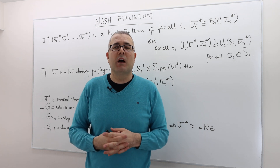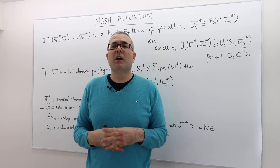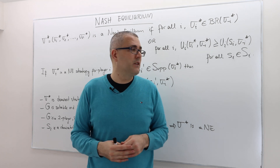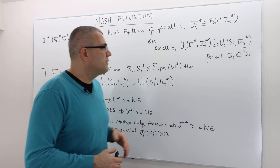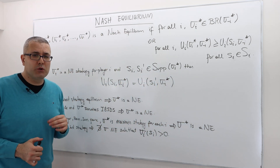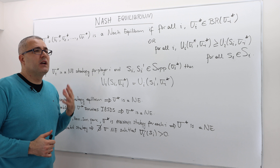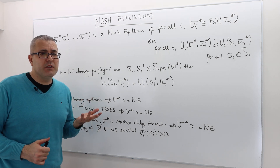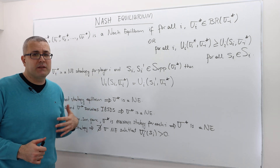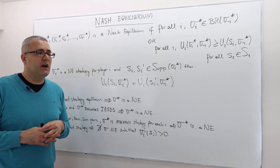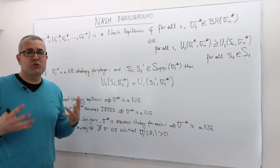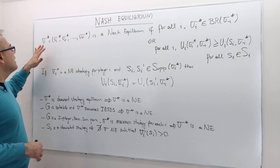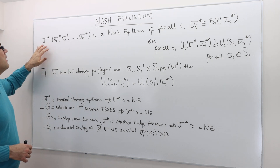For example, matching pennies or the battle of the sexes — for those games we need a stronger equilibrium concept. This Nash equilibrium concept is not as intuitive as the others, but it is nevertheless the most meaningful equilibrium concept we have.